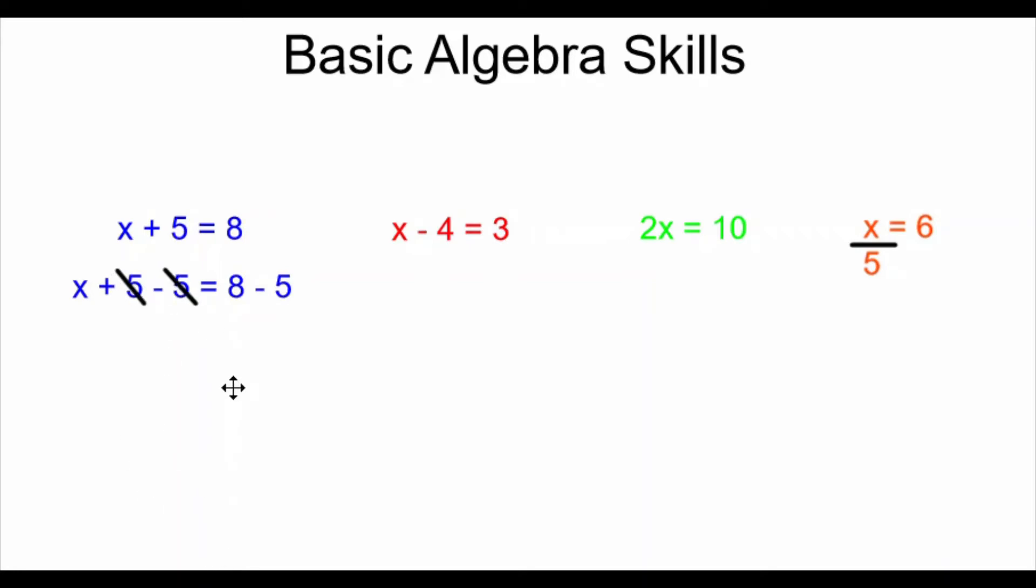These 5s cancel, which is why I'm doing this, because that leaves my x alone on the left side of the equals. And 8 minus 5 is equal to 3. So I'm left with x equals 3. I have my answer.